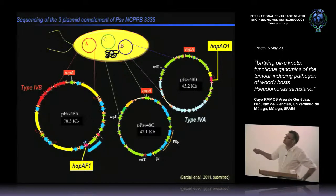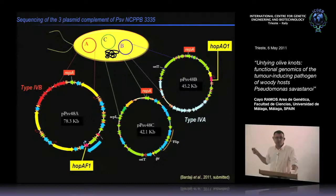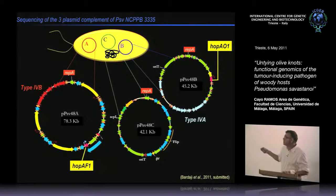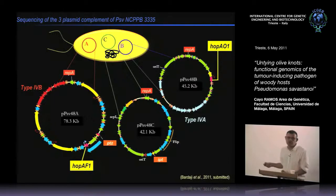Plasmid A contains a type 4B secretion system important for conjugation or plasmid transfer between bacteria, and a type 4A secretion system similar to Agrobacterium tumefaciens. It also contains the PTZ gene involved in cytokinin biosynthesis, and we have found another gene probably also involved in cytokinin biosynthesis, though this has not yet been tested.